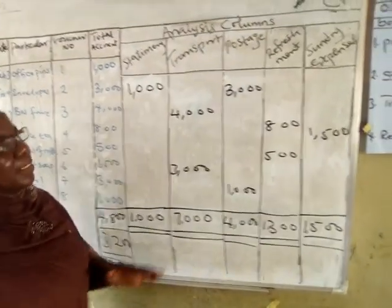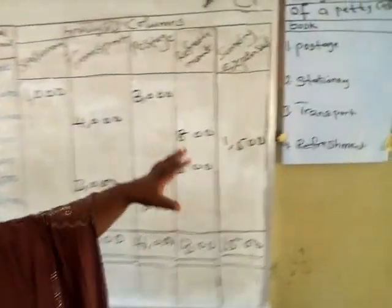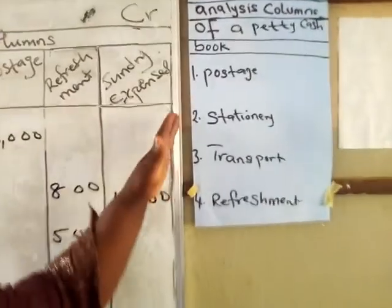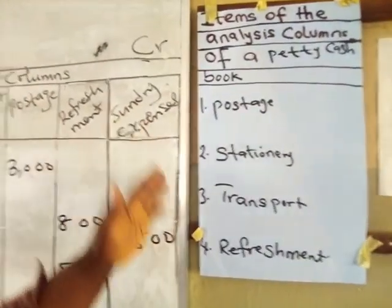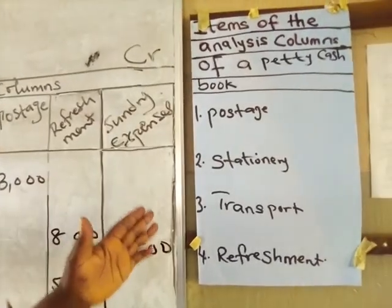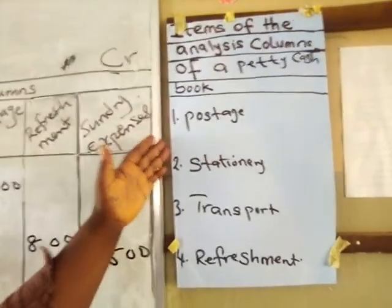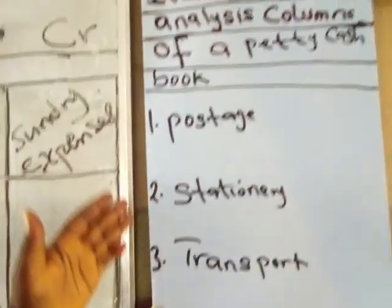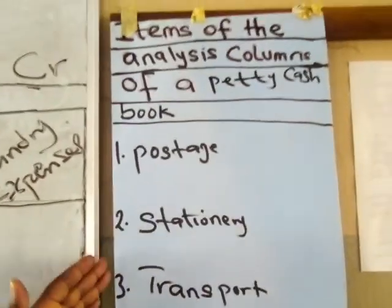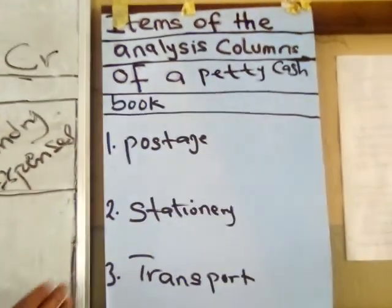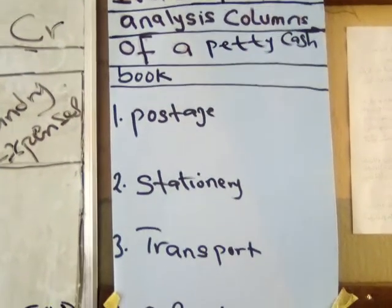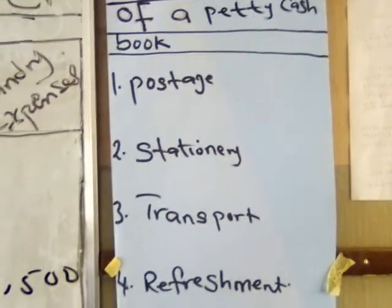From this example you can see the items on the analysis column — postage, stationery, transport, refreshments, and sundry expenses — all correctly classified. Thank you very much.